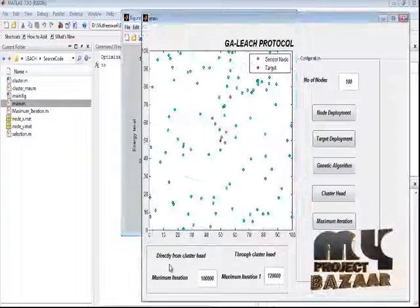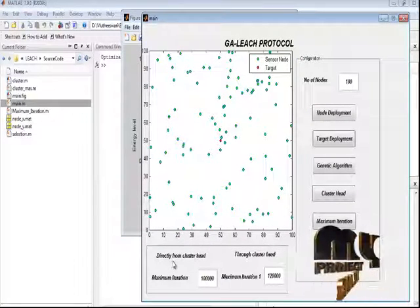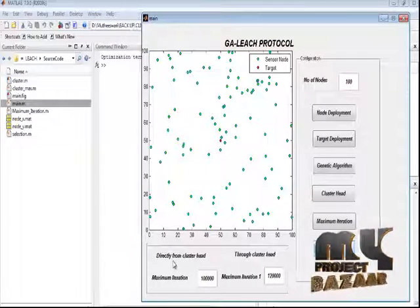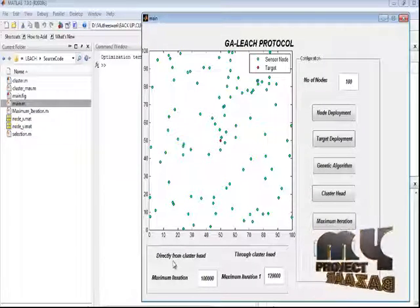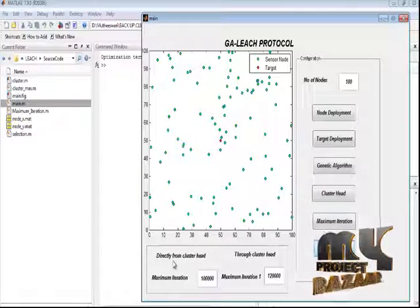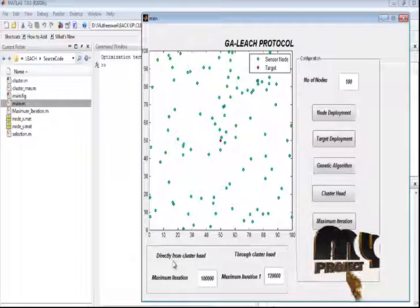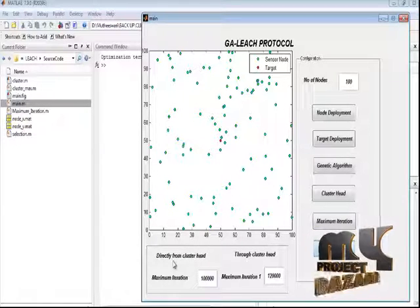After analyzing the energy level, we obtain the maximum number of network life. Finally, the proposed and unmanned application of LEACH protocol based on energy heterogeneity and adjusted to genetic algorithm outperforms the previous protocol in terms of energy dissipation rate and network lifetime. Thank you.